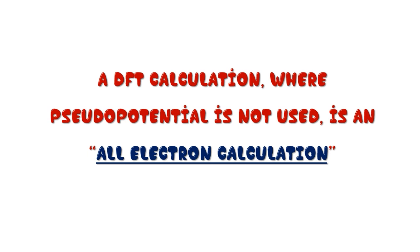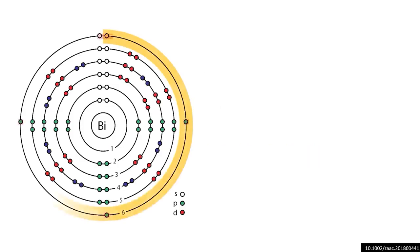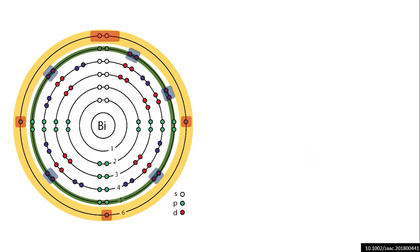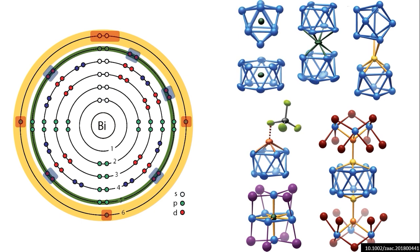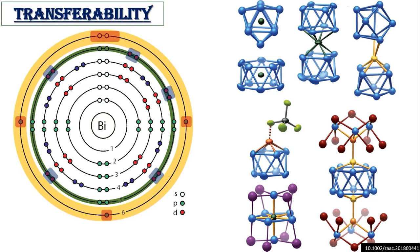Ideally, a pseudopotential is developed by considering an isolated atom of one element, but the resulting pseudopotential that you have got by the calculation can then be used reliably for this atom in any chemical environment without further adjustment of the pseudopotential. This desirable property is referred to as the transferability of the pseudopotential.